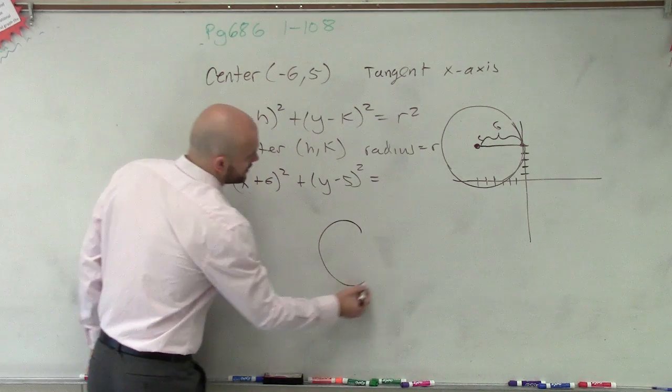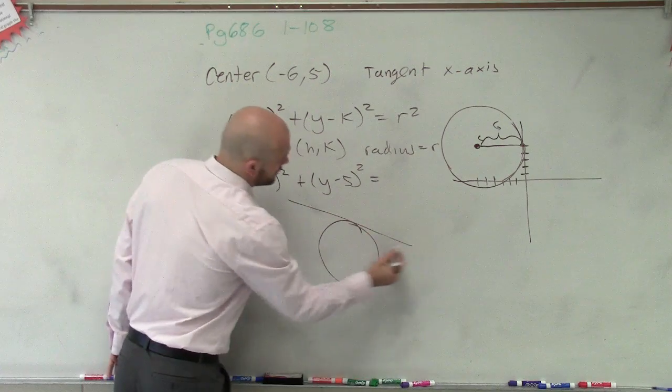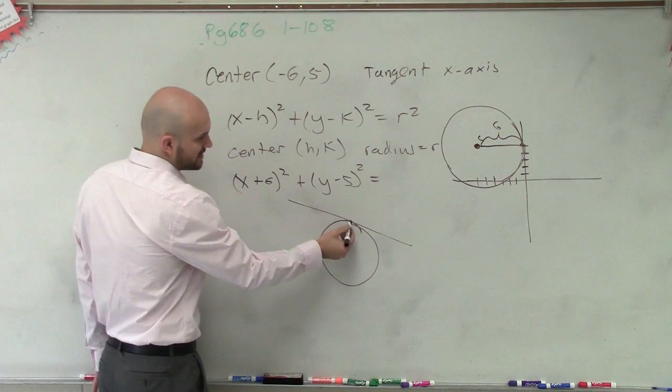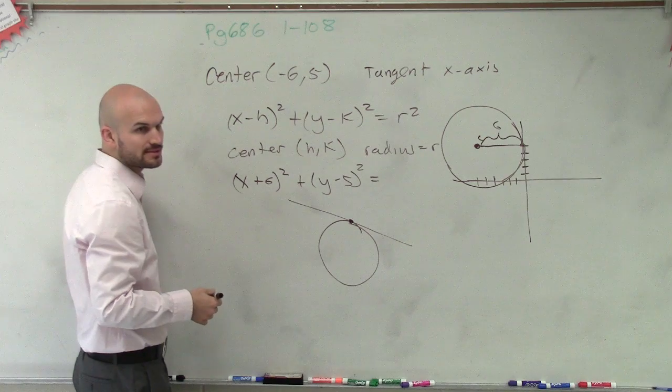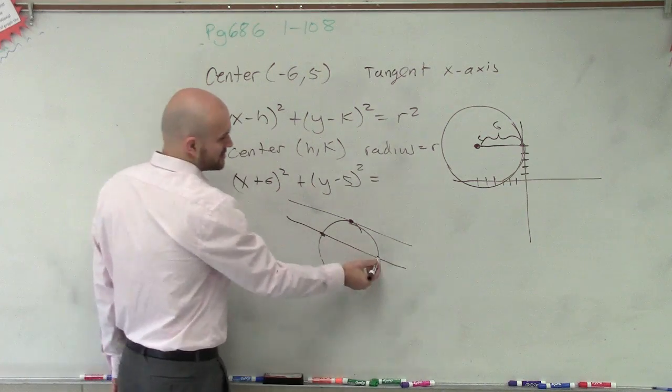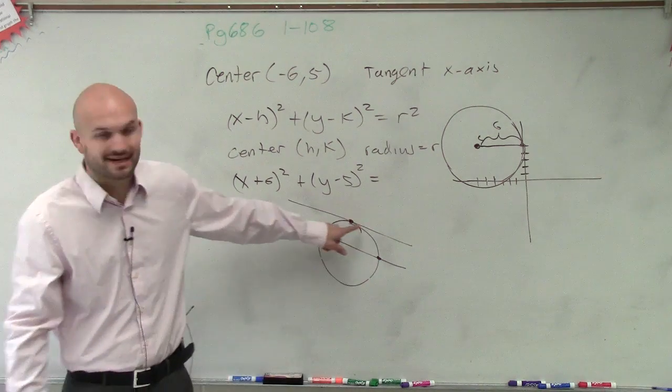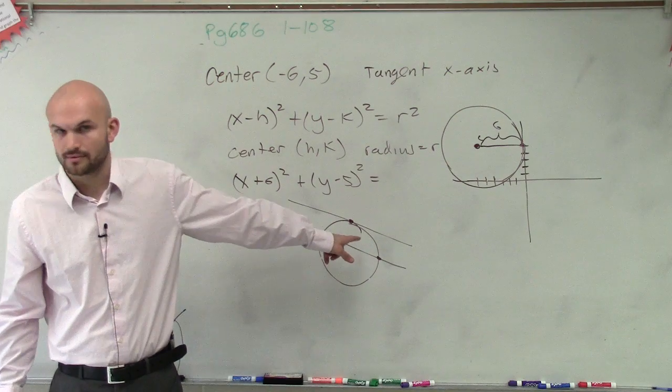Let me give you guys an example. If I say draw a line that's tangent to the circle, this is a line tangent to the circle. It touches at exactly one point. This would be a line that crosses the circle. It touches at two points. So if a line is tangent to something, it's going to touch at exactly one point. Make sense?